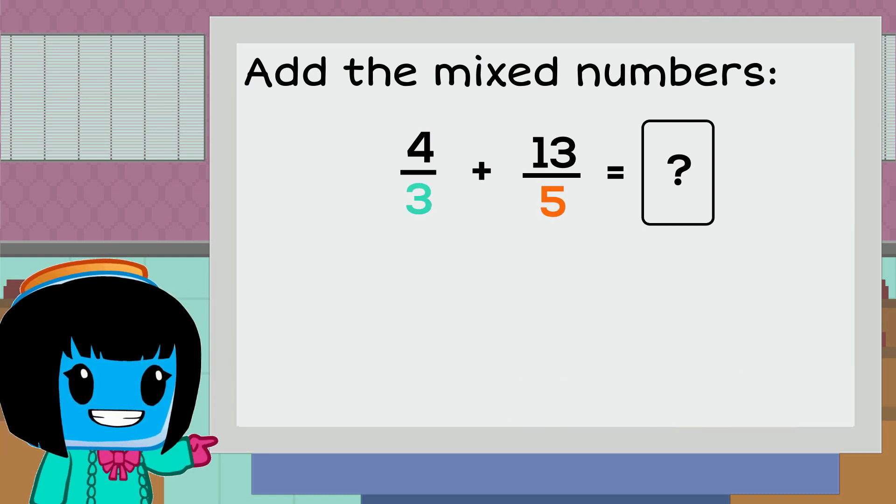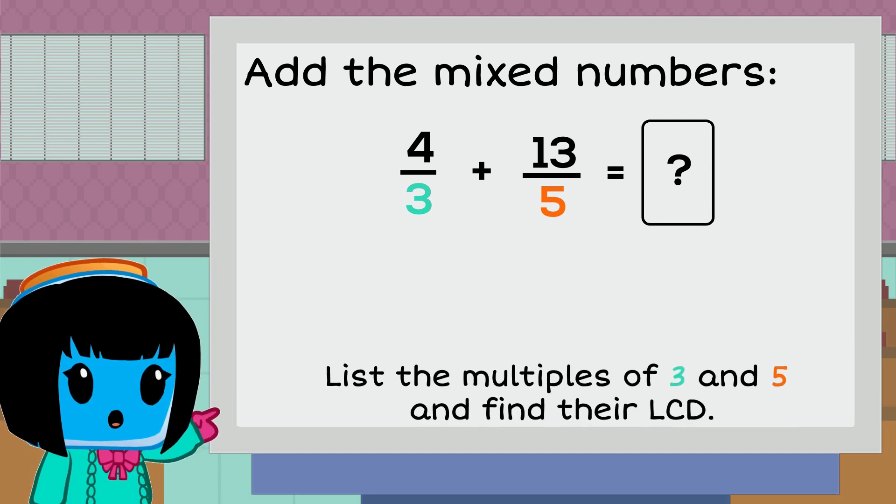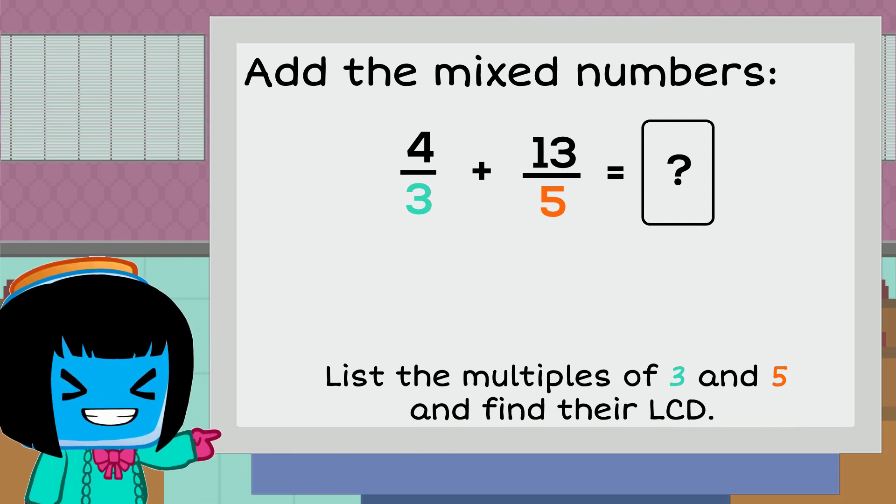Notice that we still have unlike denominators, so we need to take care of that. We have denominators of 3 and 5. Let's list the first few multiples of each number to find the lowest common denominator.